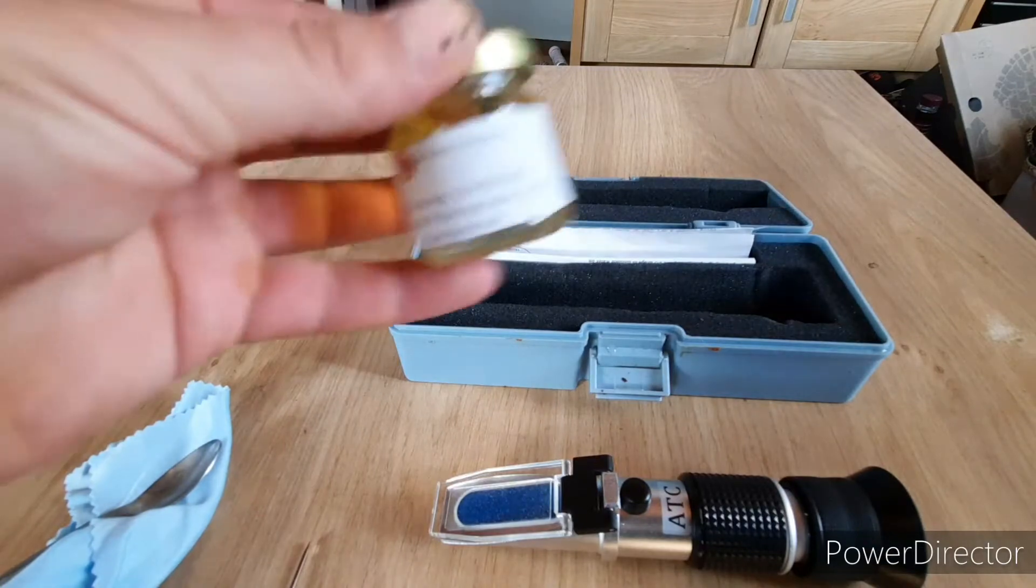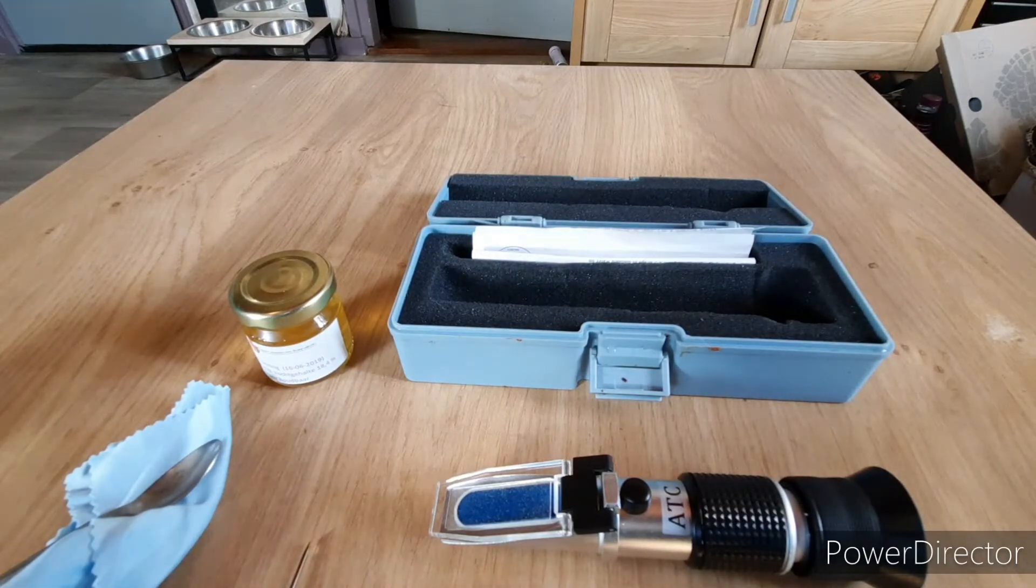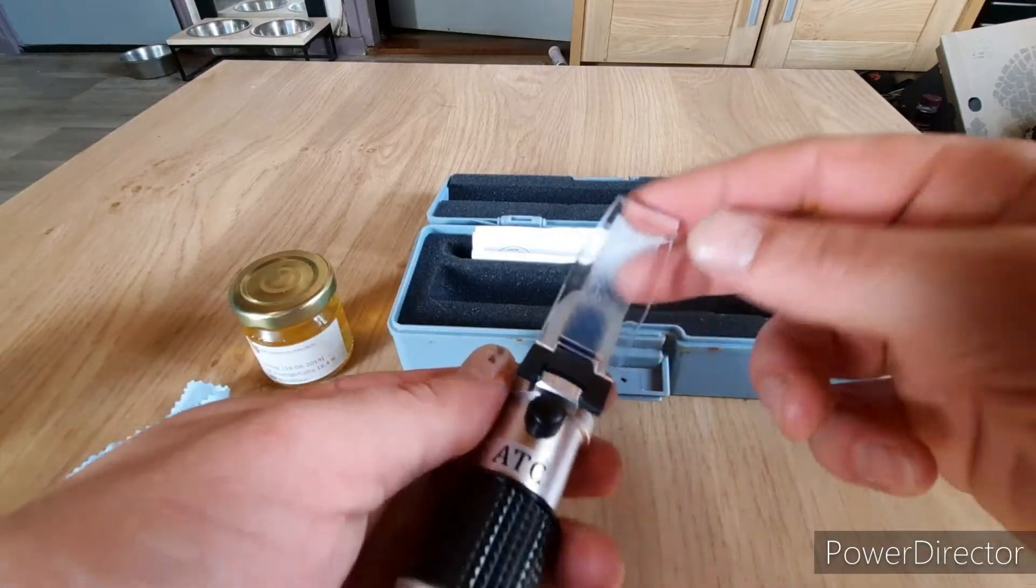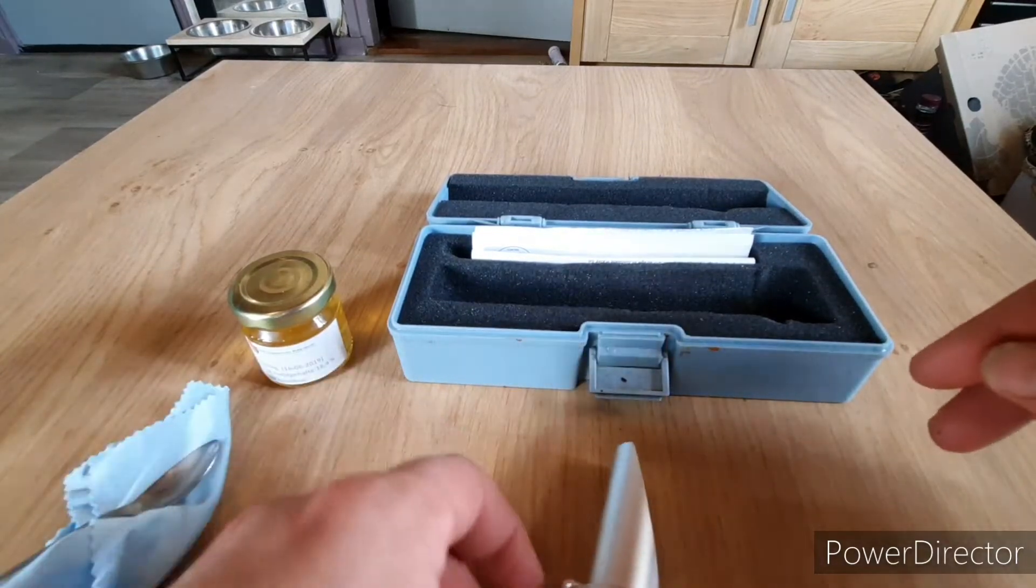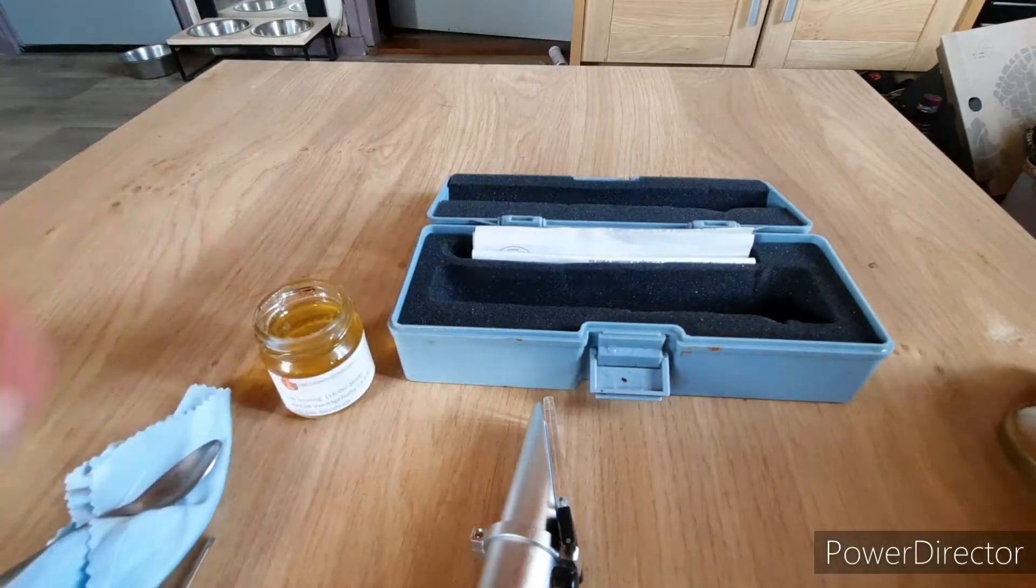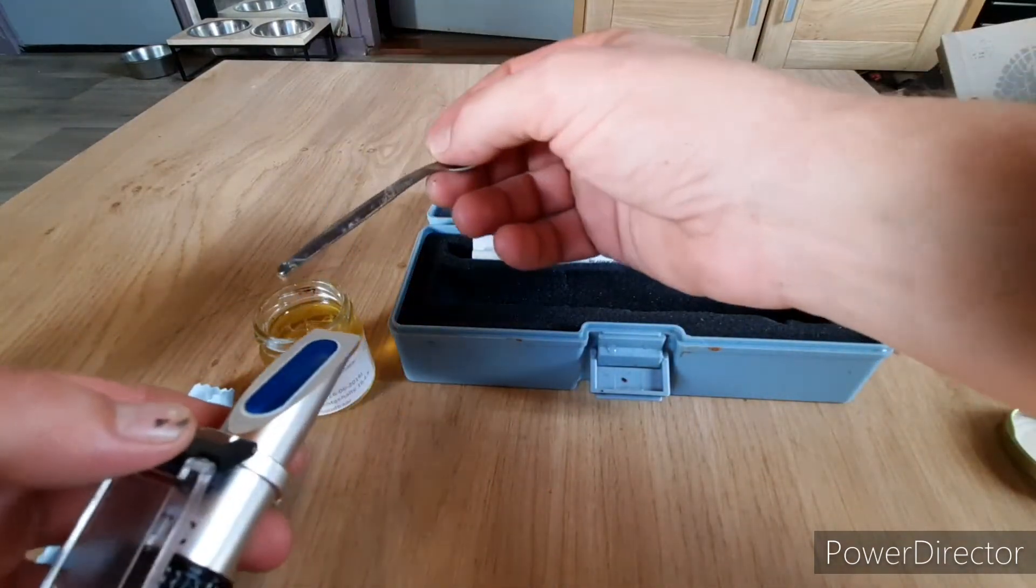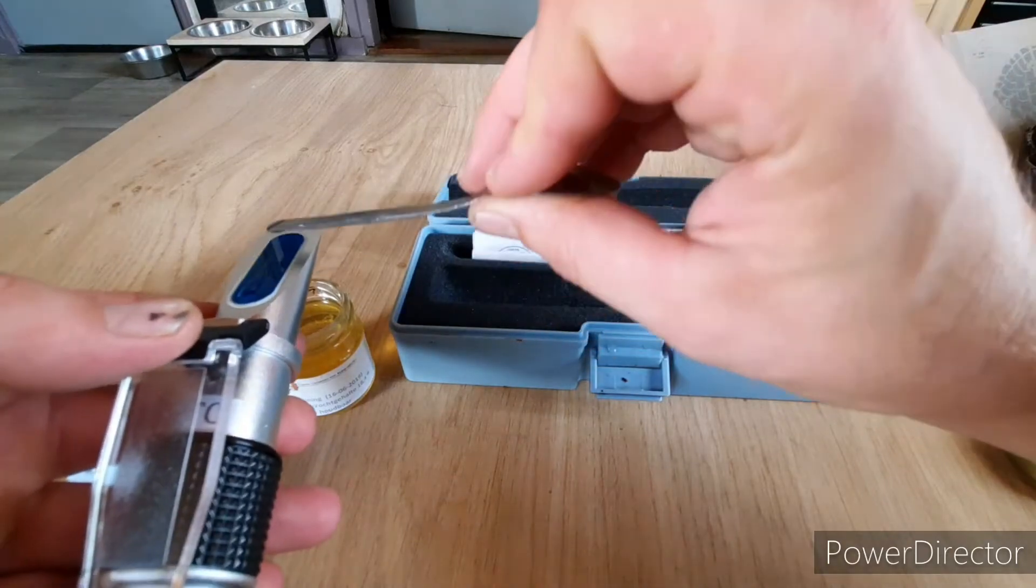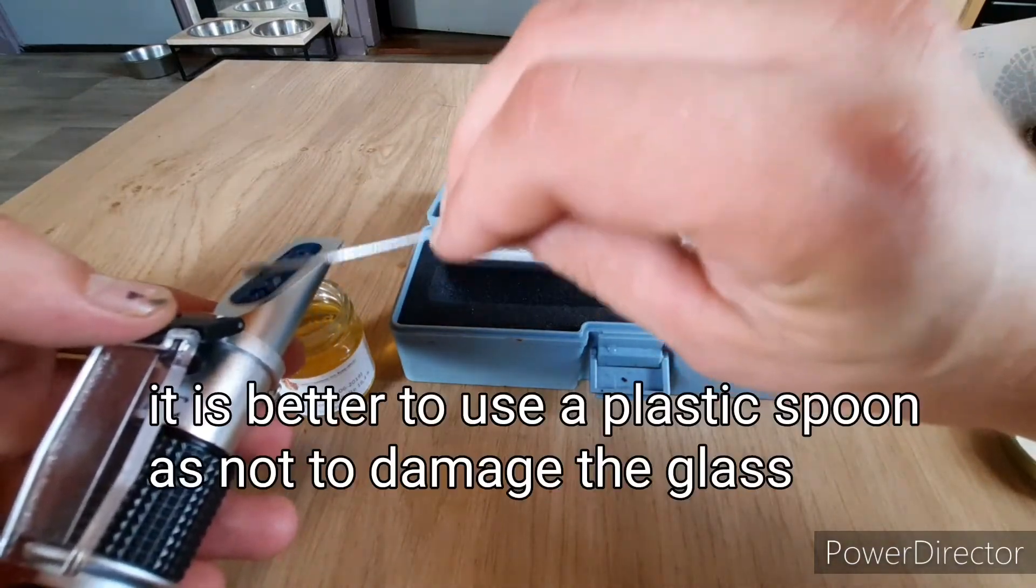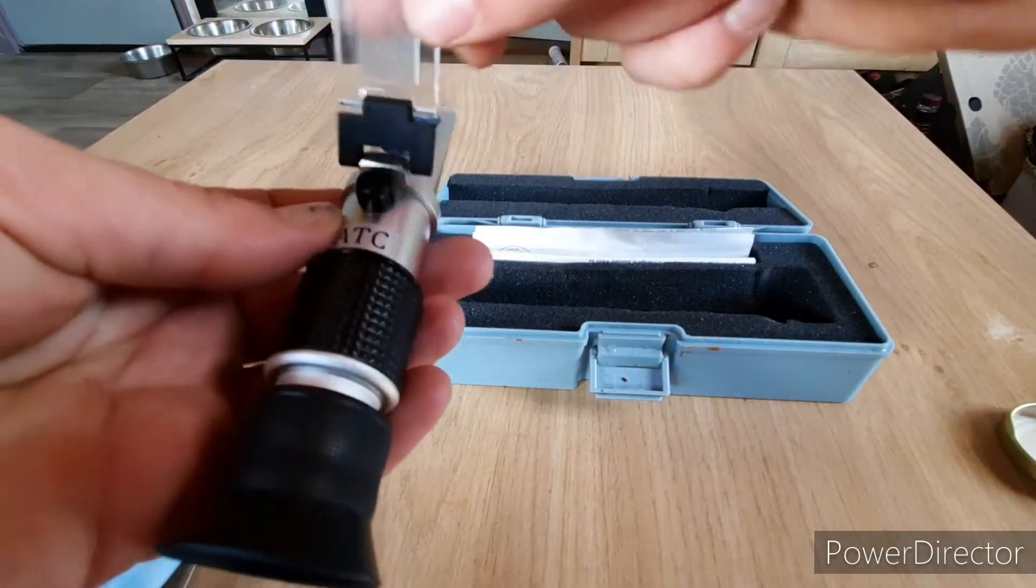The only sure way to know honey is ripe is with the refractometer. So how do we use it? Well, we'll open it up, I'll open the honey, and just take a little bit of this calibration honey, put it on there. It's glass so be careful. We close it up.